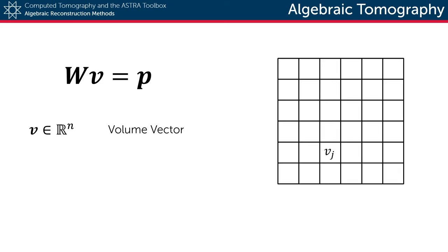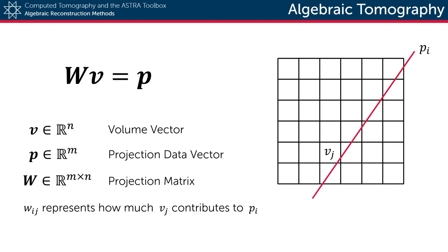Now in this formula, V is a one-dimensional vector of n elements, each representing a voxel value of a certain 2D or 3D volume. P is a one-dimensional vector of m elements, each representing a measurement taken at a certain detector in a certain projection direction.